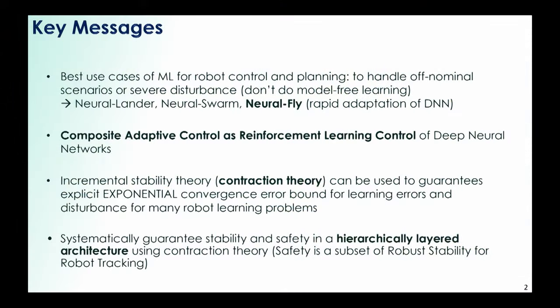A lot of people in the control, robotics, and machine learning community are talking about that. I'm going to present my own view, shared by a lot of researchers, on what's important in terms of guaranteeing stability and safety. That's essentially contraction theory. Another key word is that, empowered by this contraction stability viewpoint, we can also create a more complicated layered architecture of control and planning. That's hierarchical connection — it's not new.